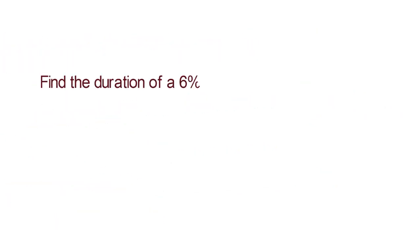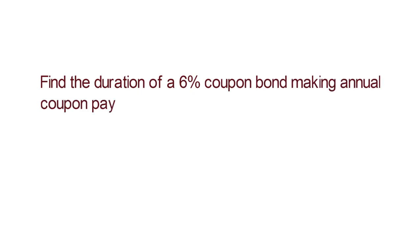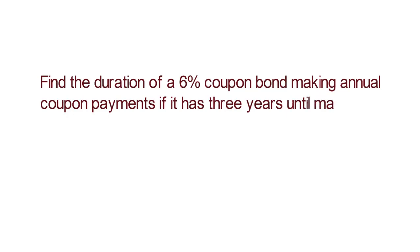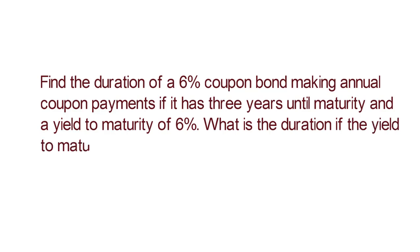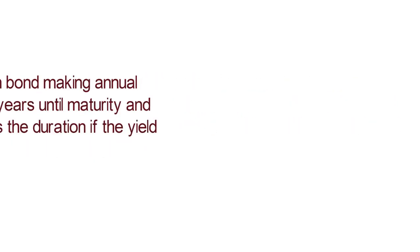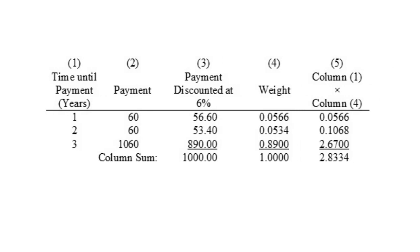Let's take an example. Find the duration of a 6% coupon bond making annual coupon payments if it has 3 years until maturity and a yield to maturity of 6%. What is the duration if the yield to maturity is 10%? The calculation will look like this. Since the bond has 3 years to maturity,